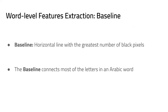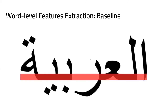We now move to word-level feature extraction. The first feature we wanted to isolate was the baseline — defined as the horizontal line for each word with the greatest number of black pixels. The baseline is important because it connects all or most characters in an Arabic word and provides a useful landmark for extracting other features.